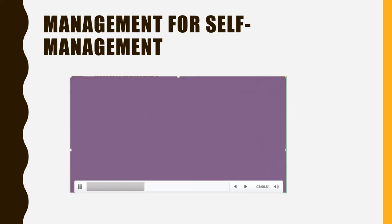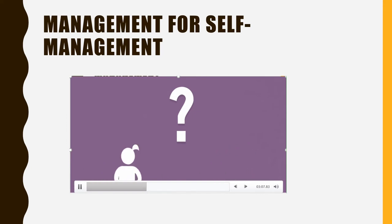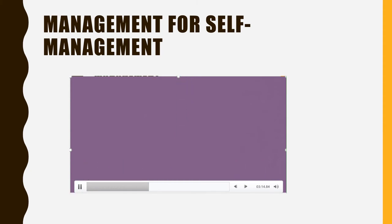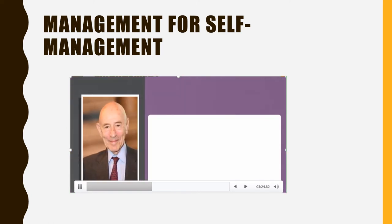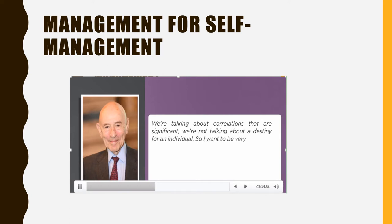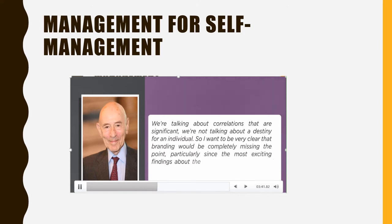All these results lead to one big question: what does this mean for the kids who ate the first marshmallow? For that matter, what does it mean for the kids who don't have self-management between the ages of 4 and 11? Does this mean if a child hasn't developed the right self-management skills early, their whole life path is much worse? Here's what Walter Mischel says about this: 'We're talking about correlations that are significant — we're not talking about a destiny for an individual. Branding a child would be completely missing the point.'